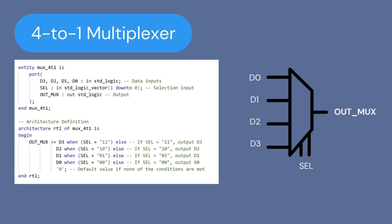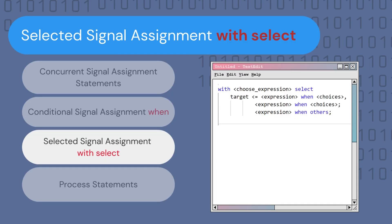Notice how we use the equal sign as a relational operator in the condition, where the select signal is matched to values bundled within double quotes — "00", "01", "10", and "11".